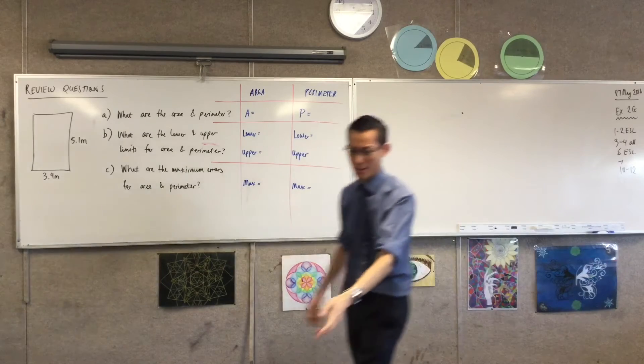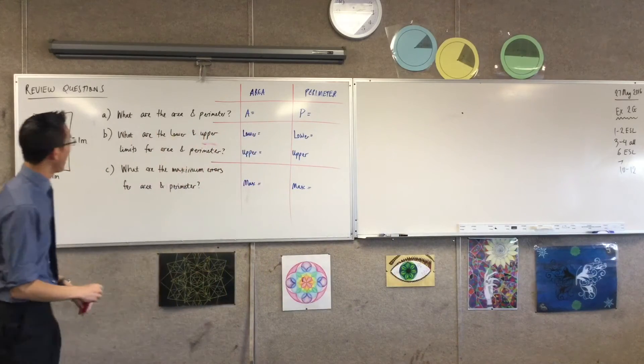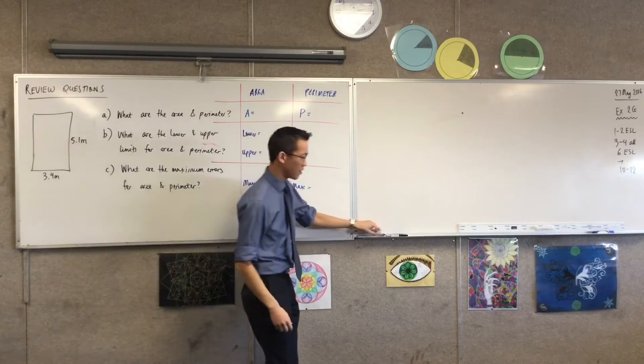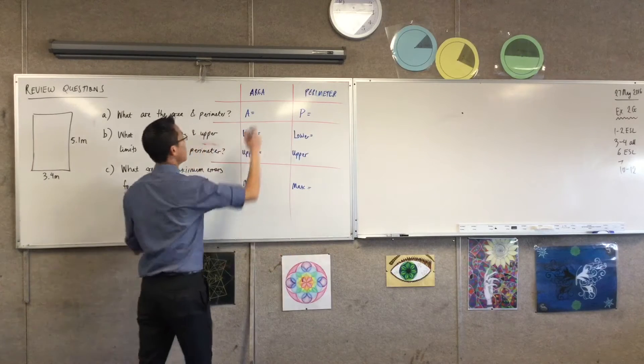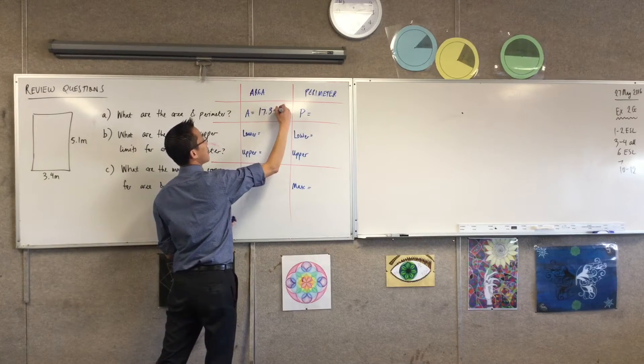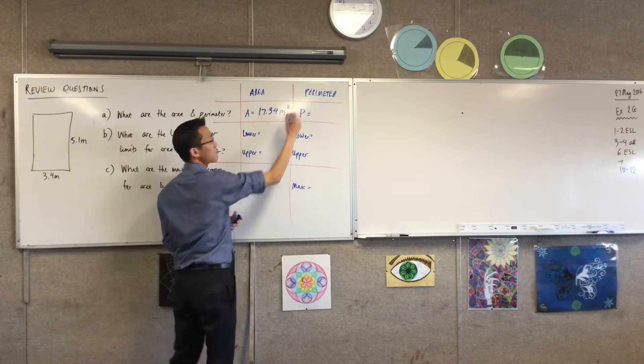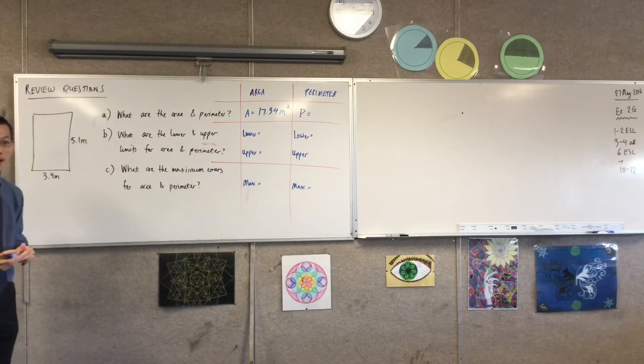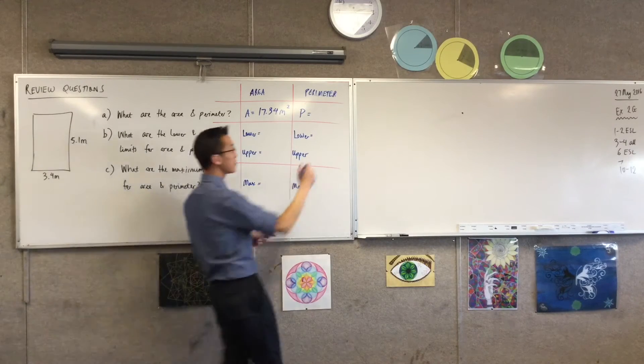Let's do the easy bits first, okay? Can someone, has someone already worked out what our area and perimeter are? Area is 17.34 meters. 17.34 meters squared? Yes. Yep, okay. And a perimeter? 17. Exactly? Yeah, 17 meters.